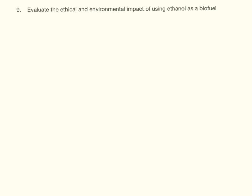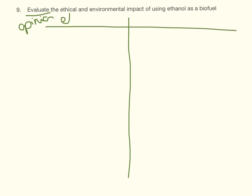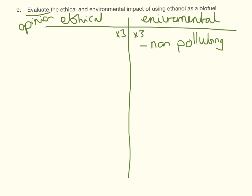So this is a tricky question because of this word here: evaluate. It means you have to give some good things, you have to give some bad things, and then you have to give an opinion. So whenever you see a question that has different parts to it, I always like my students to draw a table. That way we know we can get at least three things in here, at least three things in there, and then we should be hitting our marks. So ethanol as a biofuel - if we start with the environmental reasons, there are no polluting gases, so it's non-polluting, it doesn't contribute to climate change, global warming, or acid rain.